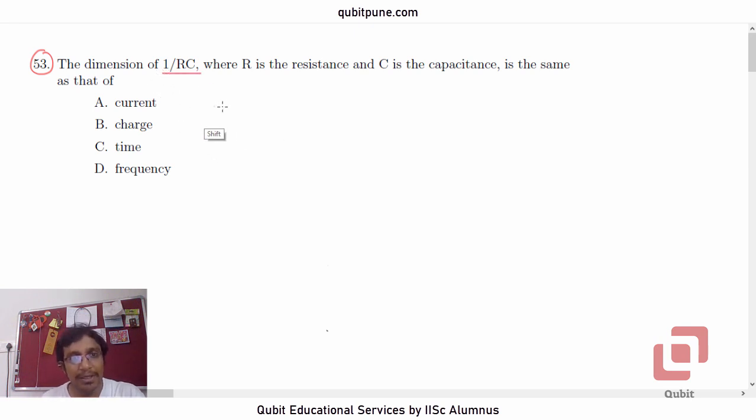The dimension of 1 upon RC, where R is the resistance and C is the capacitance, is the same as that of current, charge, time, and frequency.